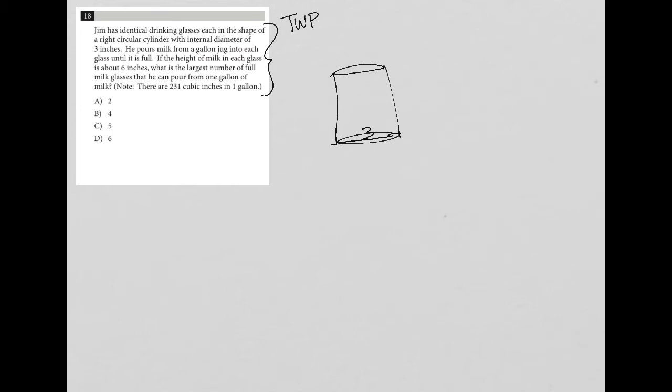He pours milk from a gallon jug into each glass until it's full. So let's just say this glass is full with milk. If the height of milk in each glass is about six inches, so this height now is six inches.